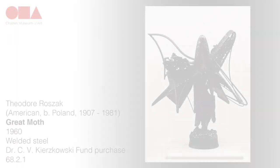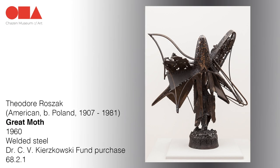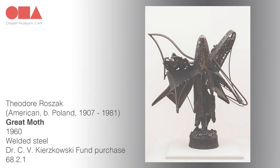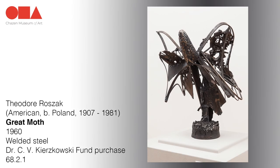The fixity of bronze leaves no room for transformation and eliminates the softness of the larvae. The energy and movement, however, do translate across media, with the wings seemingly caught in the midst of a flap. The controlled chaos of the pen is materialized in the swarming masses of metal between the wings.